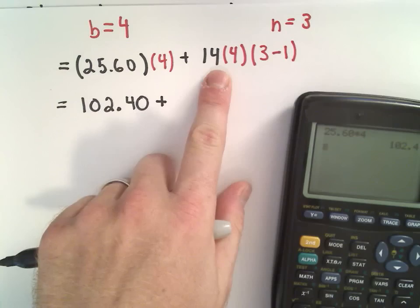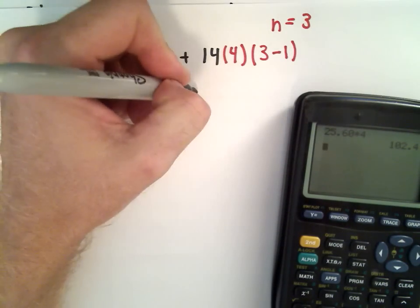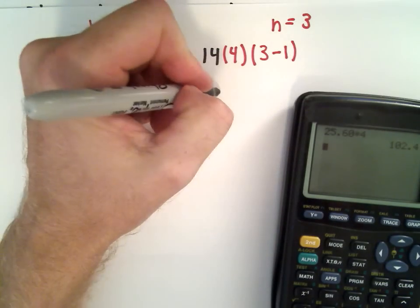Plus, I'm going to multiply 14 times 4. 14 times 4 is going to be 56. In the parentheses, I've got 3 minus 1. That's going to give us 2.